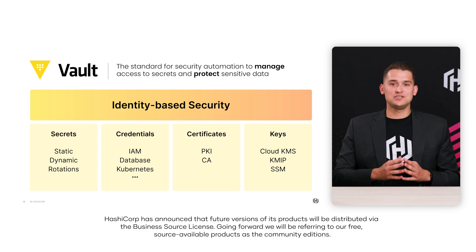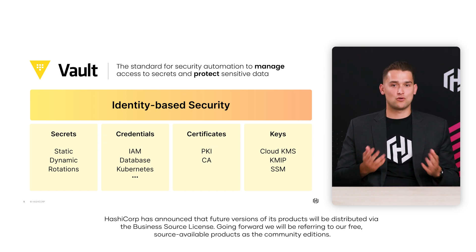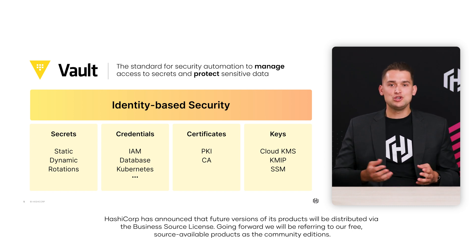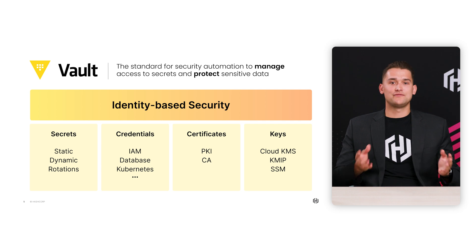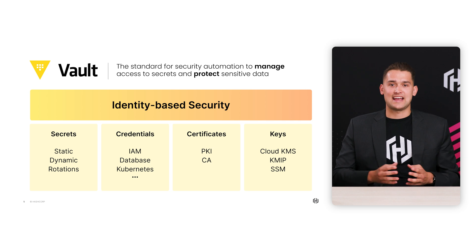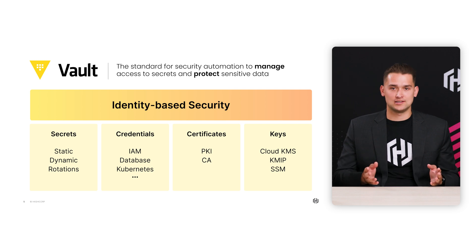Before we dive into the Vault Secrets Operator for Kubernetes, I want to take a quick minute to give the audience an overview of what Vault is. Vault enables you to harness identity brokering to manage access to your secrets and protect sensitive data in your organization. When you're adopting multiple clouds, systems, and different endpoints, you want to make sure that the identity accessing this sensitive data is trusted. Over 70% of the top 20 US banks trust Vault to handle their sensitive data, and we're currently servicing trillions of secrets each year for thousands of different organizations.